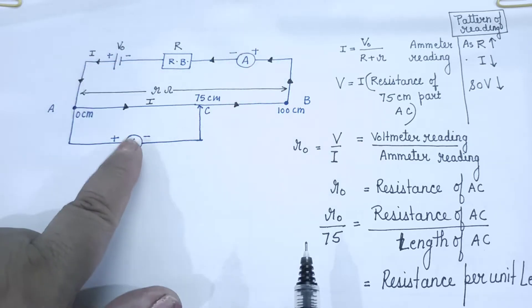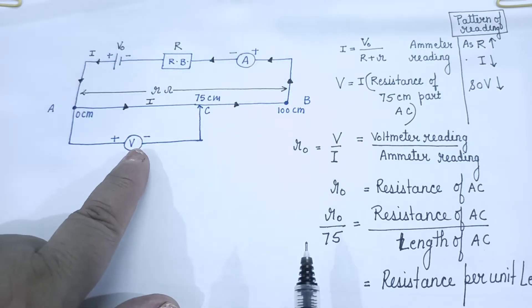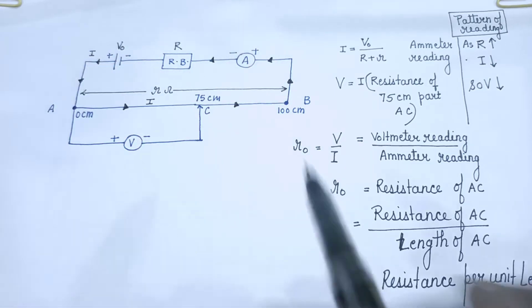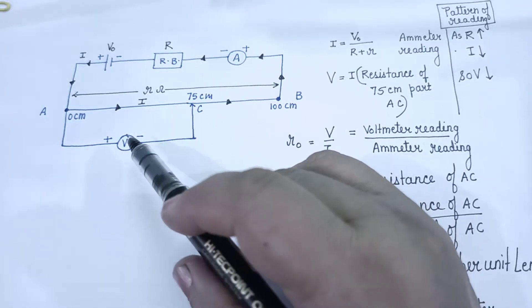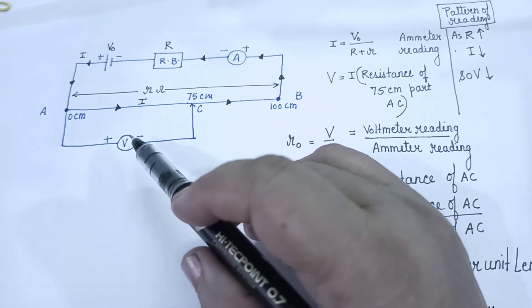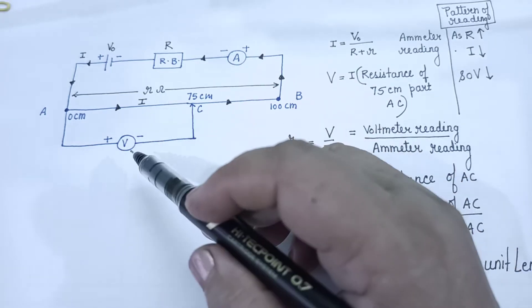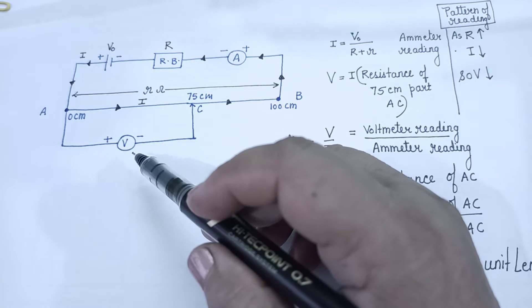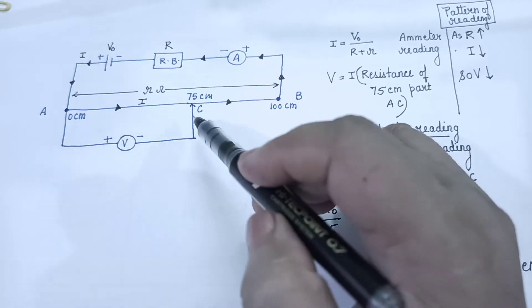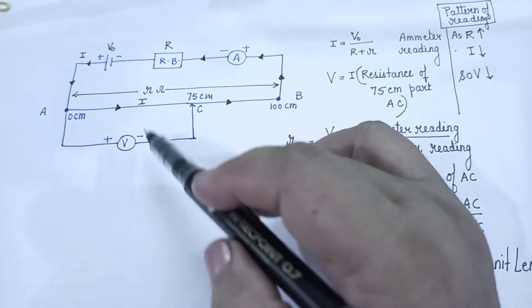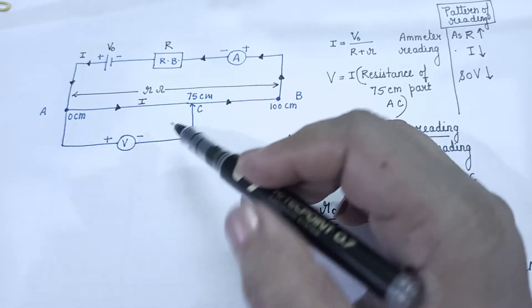No current is shown in the voltmeter because the voltmeter resistance is either very high or ideally — actually it is infinite. So we never show the current through the voltmeter.